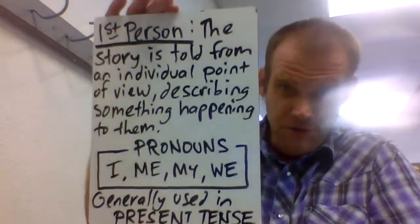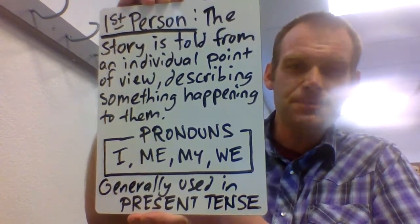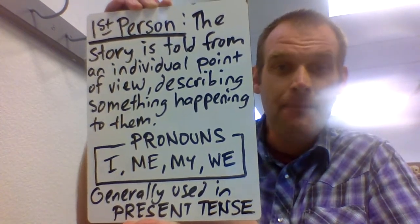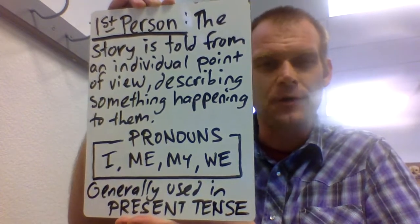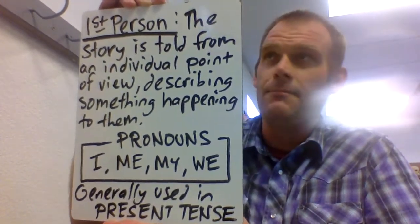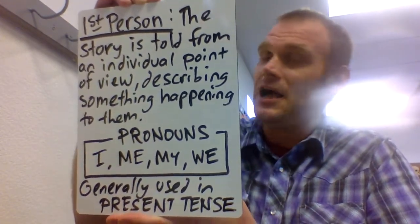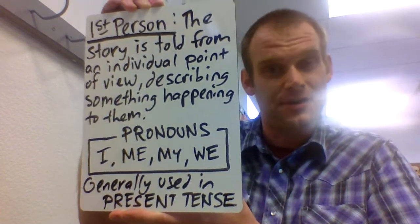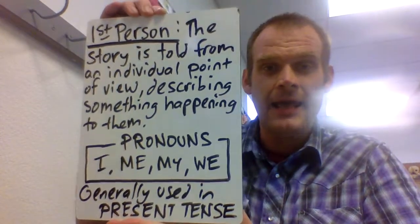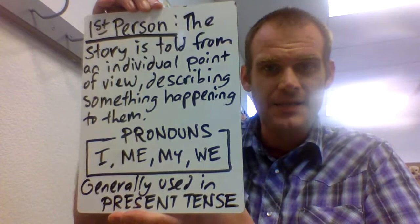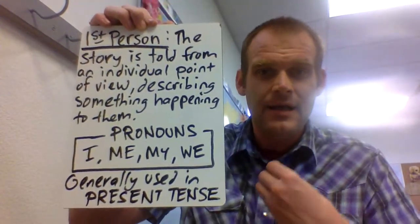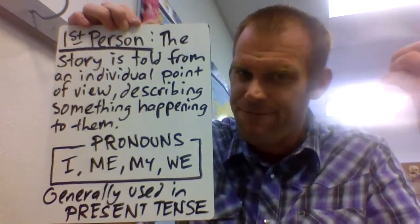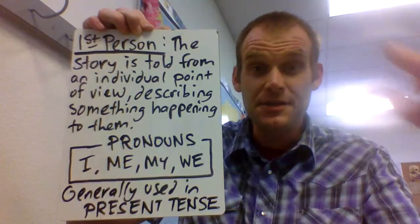The first one we're going to go over is first person. In first person, the story is told from an individual point of view, describing something that is happening to them. A good example of first person would be a personal journal. For instance, let's say Mr. Buckman has a journal and I enter: July 14th, 2020 — today I went to Oak Creek Canyon and I saw a family of lizards. It's a point of view describing something the author themselves experienced. First person can also be used in fiction when a character is describing something that is happening to them.